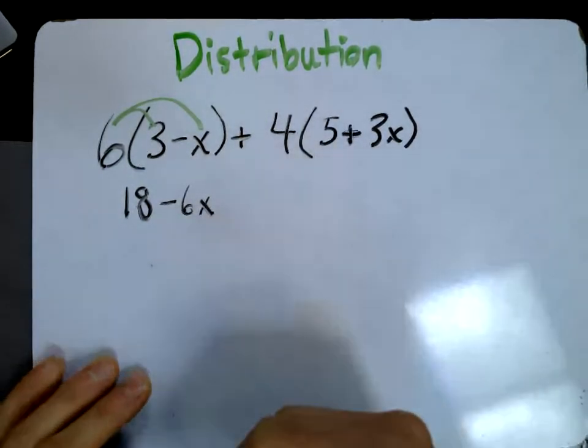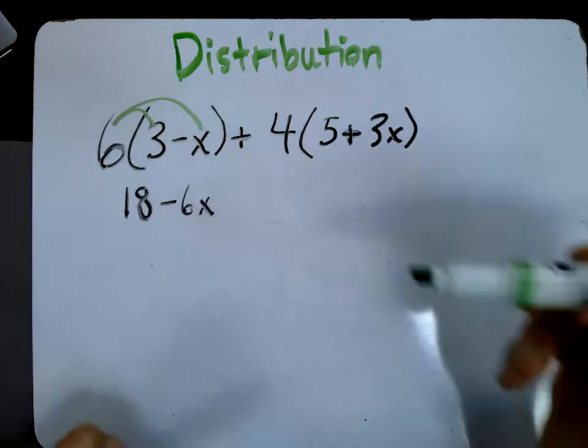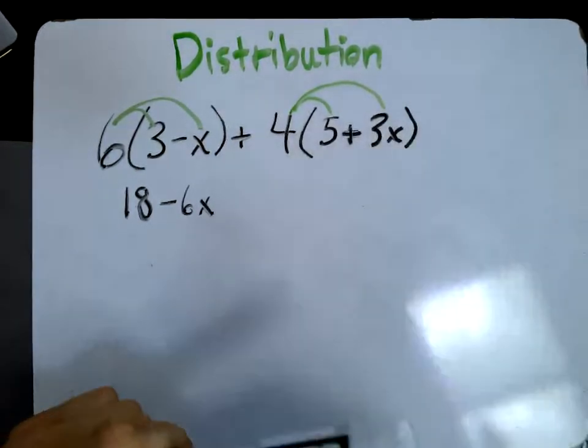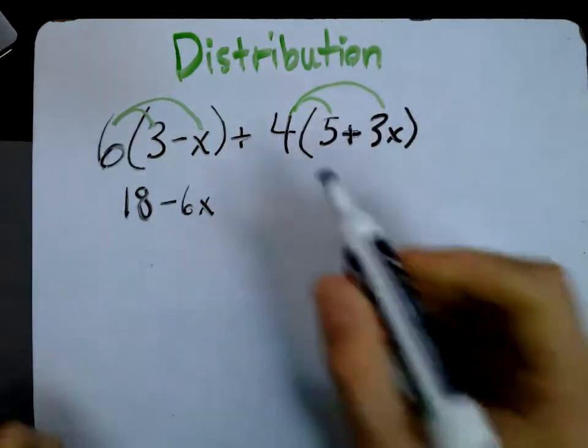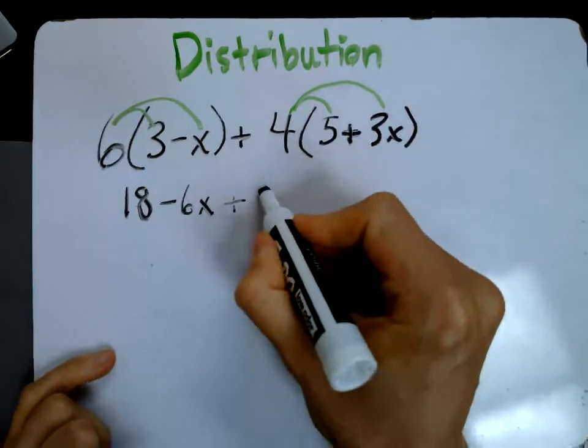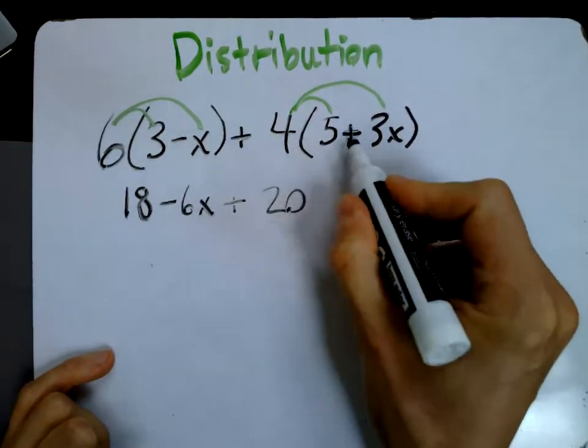And then I got another one to distribute over here, so you get a four and you get a four. I'm going to just rewrite here, this plus still being added together. Four times five, that's 20.